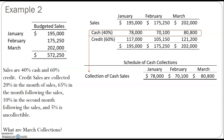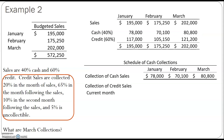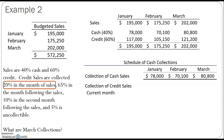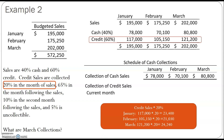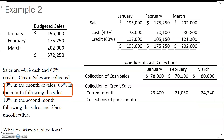Now we can move into creating our schedule of cash collections. First, we list our cash sales — those would be expected to be collected in the month of the sale. Next we look at our credit sales. Our information tells us that credit sales are collected 20% in the month of sale. So for each of our months, we can expect to collect 20% of that credit sale amount. We take each of our credit sales, multiply them by 20%, and add them into our schedule.